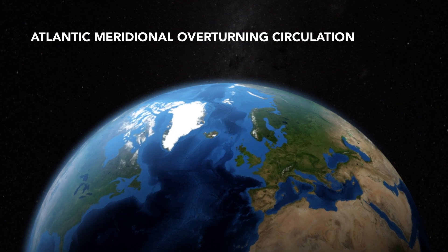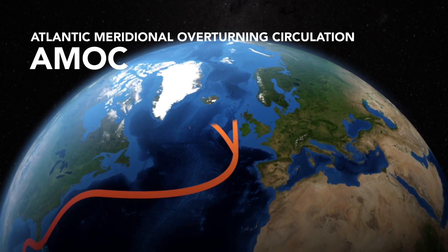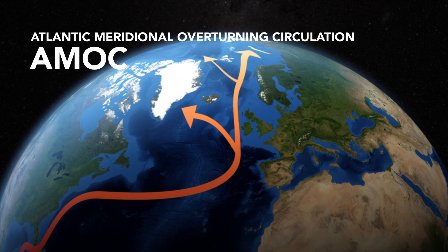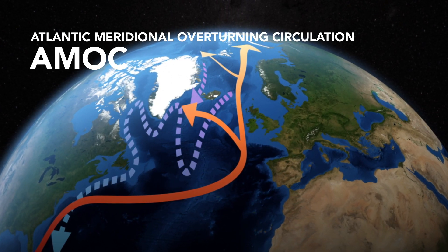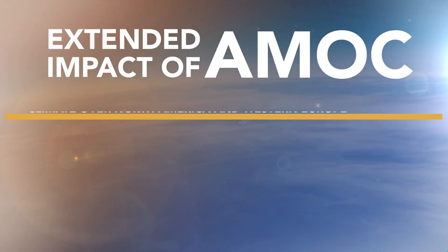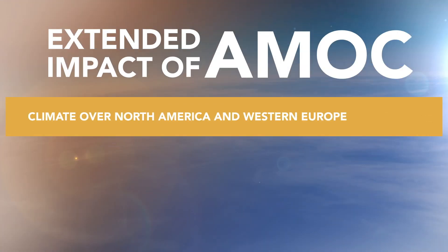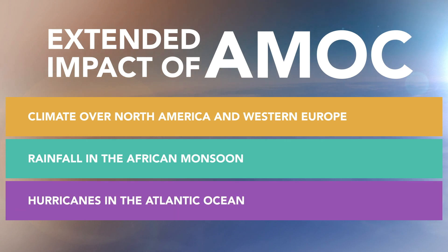The Atlantic Meridional Overturning Circulation, or AMOC, has a northward flow of warm salty water in the upper layers of the Atlantic — the Gulf Stream — and a southward flow of colder water in the deep Atlantic. The AMOC, which includes part of the thermohaline circulation, affects the global climate system by transporting large amounts of heat. It impacts climate over North America and Western Europe, rainfall in the African monsoon, and even hurricanes in the Atlantic.